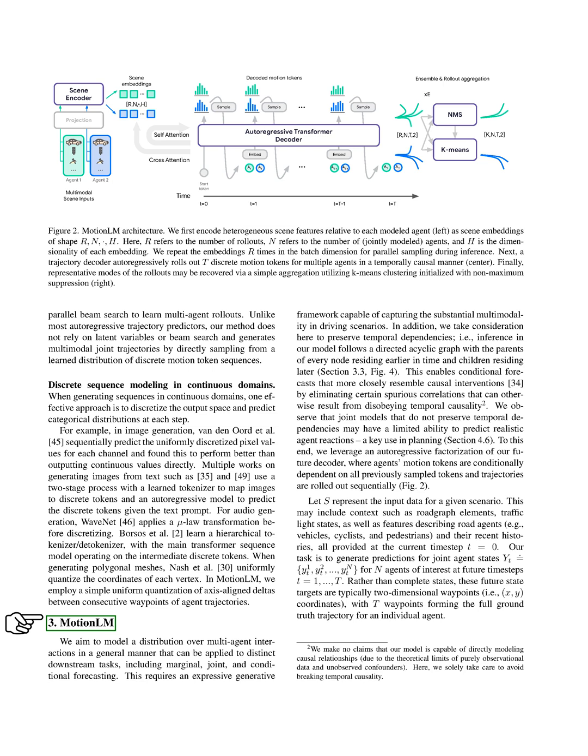Let's consider a scenario where we have input data, which includes context such as road elements, traffic light states, and features describing road agents and their recent histories. Our task is to generate predictions for joint agent states at future time steps. These future state targets are typically two-dimensional waypoints, with each waypoint forming the full ground truth trajectory for an individual agent. In our model, we predict an action for each target agent at each future time step. These actions are formulated as discrete motion tokens from a finite vocabulary. We then factorize the distribution over joint future action sequences as a product of conditionals.